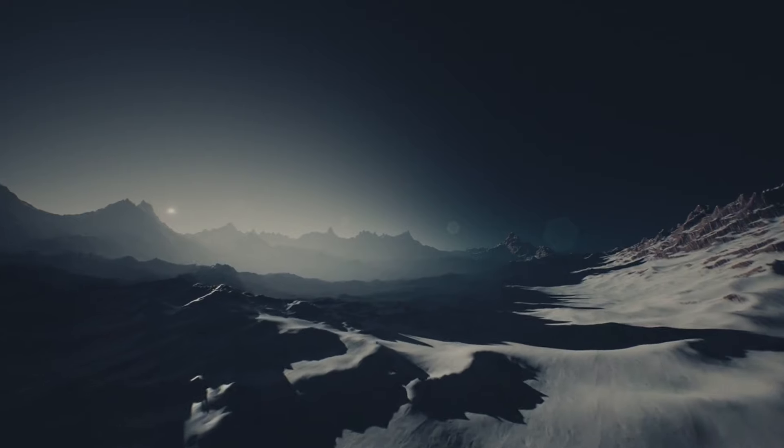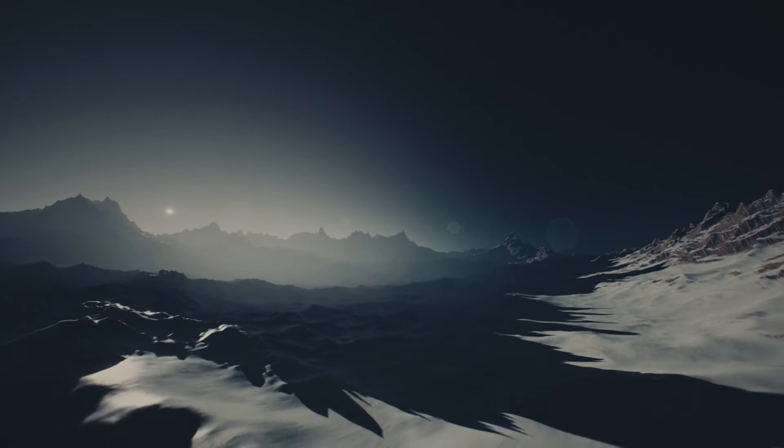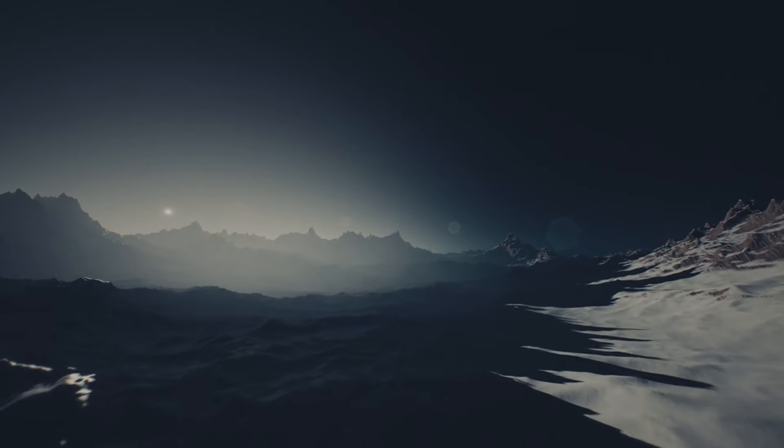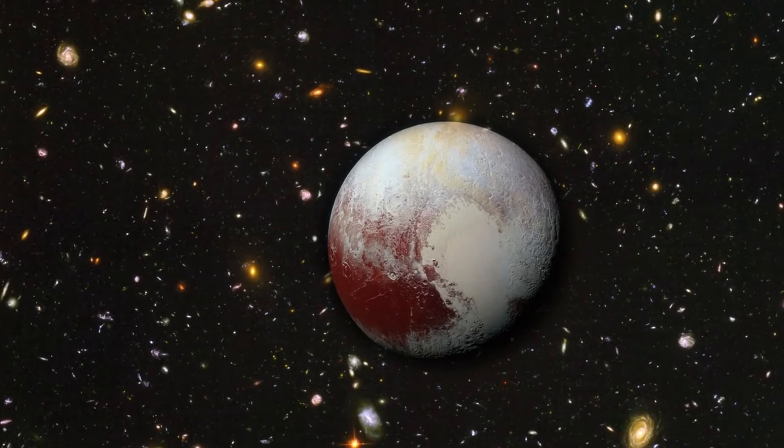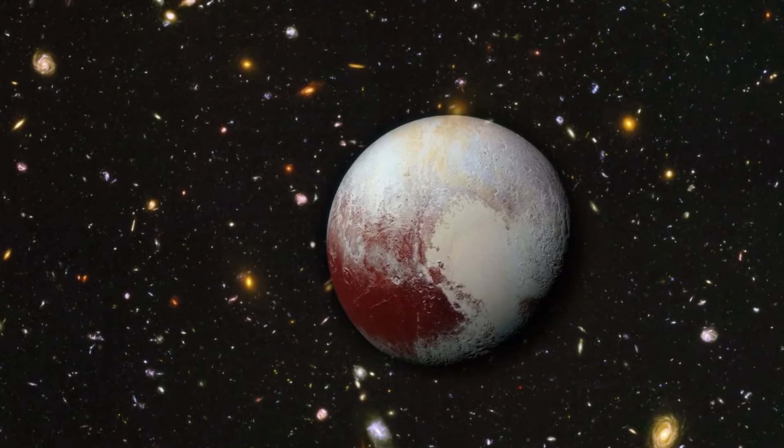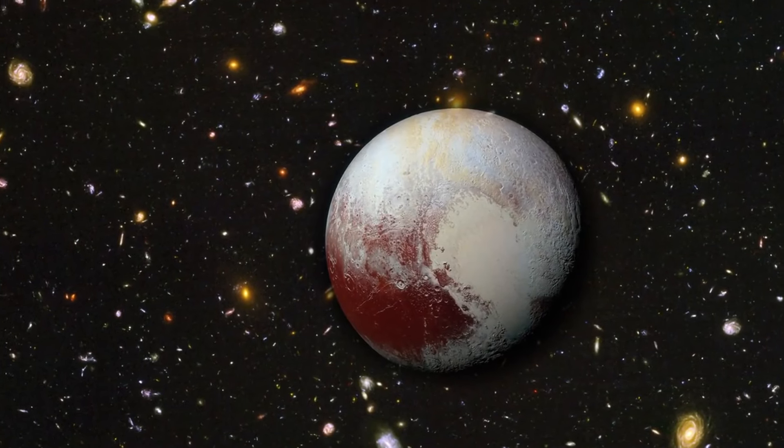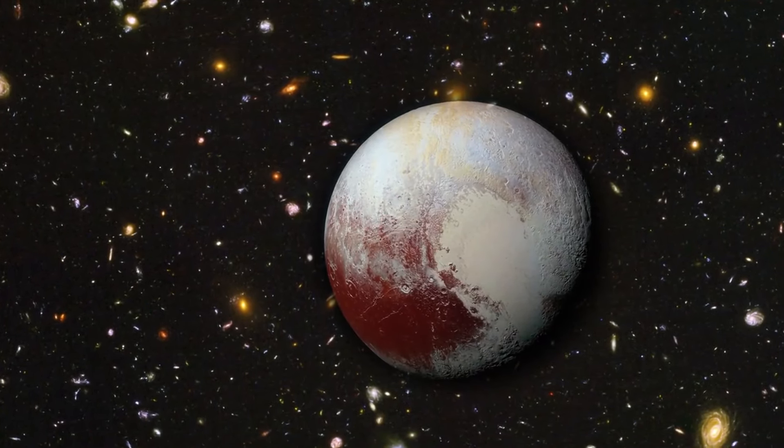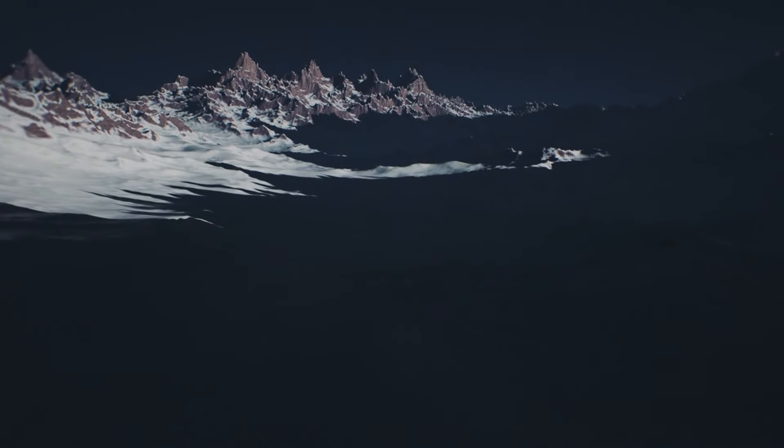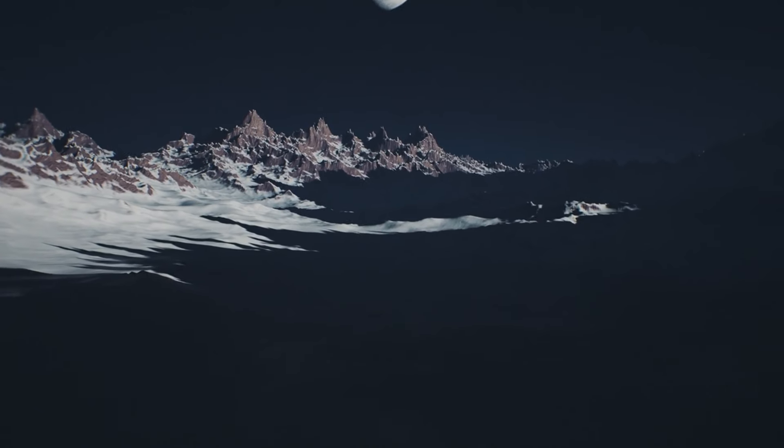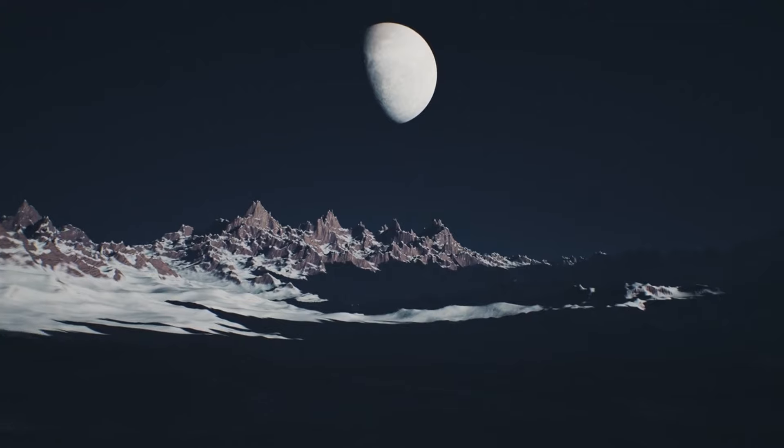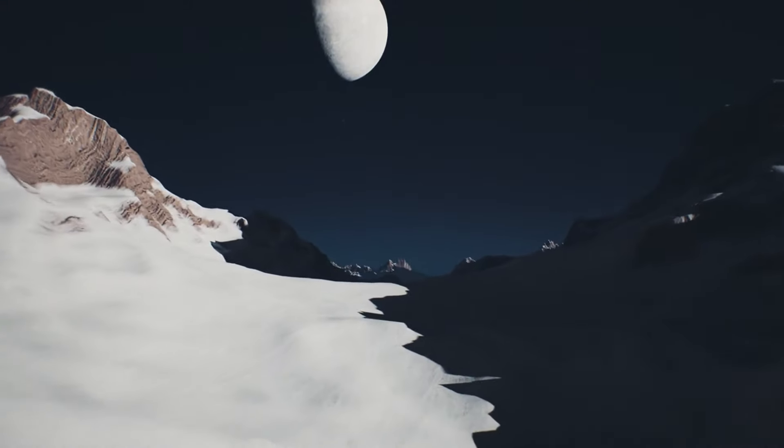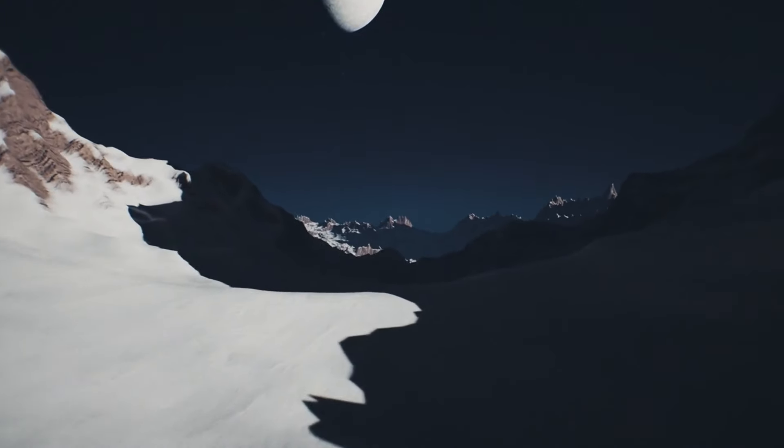One of the most striking features of Pluto's atmosphere is its ability to expand and contract dramatically as the dwarf planet moves closer to or farther from the Sun. Pluto follows an eccentric orbit, which means its distance from the Sun varies significantly over the course of its long orbital period of 248 Earth years. When Pluto is closer to the Sun, the increased solar energy causes the frozen gases on its surface to sublimate, transforming directly from solid to gas. This process adds a substantial amount of material to the atmosphere, causing it to expand.